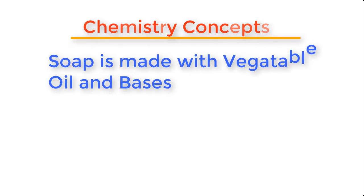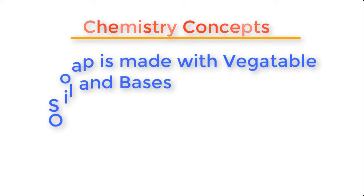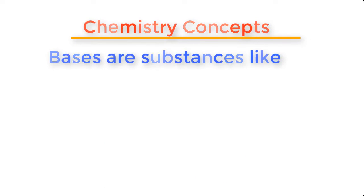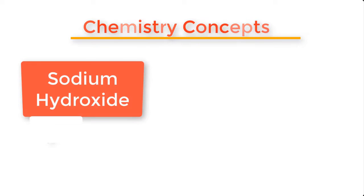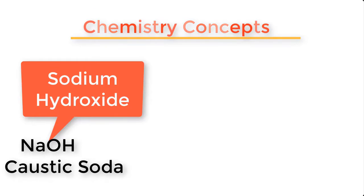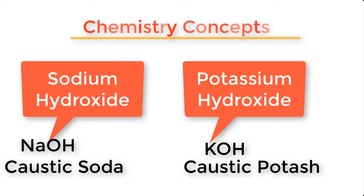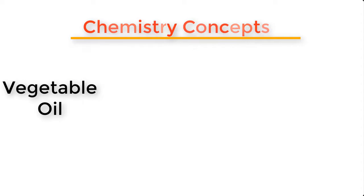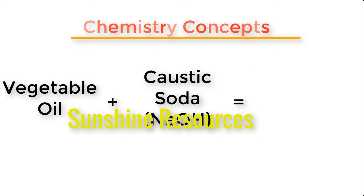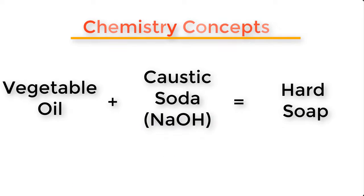Before we go into the production proper, let me explain some basic concepts about soap making using vegetable oils and bases. In chemistry, bases are substances like sodium hydroxide with a chemical formula NaOH, which is also called caustic soda. Another base I would like to mention is potassium hydroxide with a chemical formula KOH, also called caustic potash. When you react vegetable oil and caustic soda, that is sodium hydroxide, you will get a hard soap.